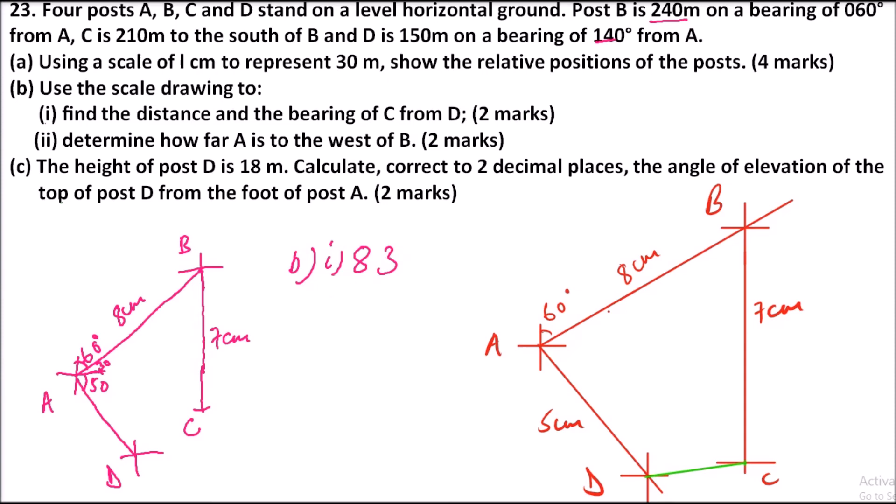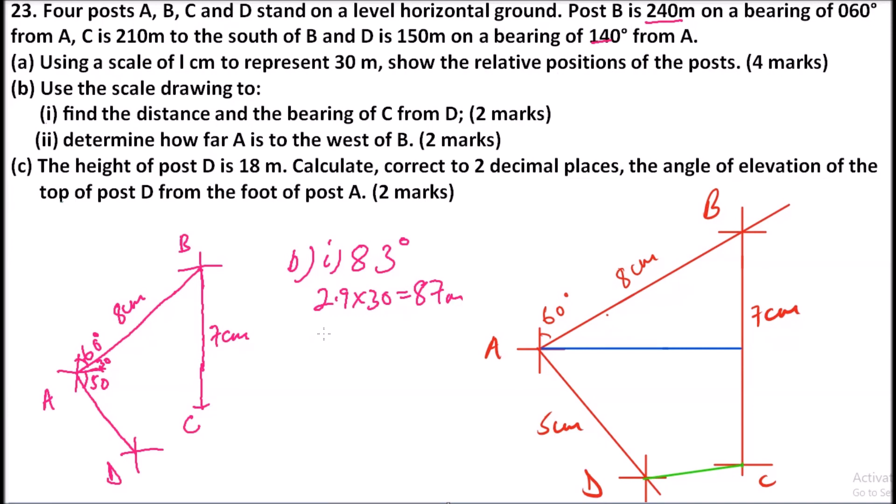And the distance I'm getting is 2.9, so it means 2.9 you multiply by 30 and you get that equals 87 meters. So that is part B of the question. Before we go to C, we look at roman number 2 of B. Determine how far A is to the west. I have drawn a line here which I found is 6 centimeters, so it means 6 multiplied by 30, and that is giving me 180 meters. So A is 180 meters to the west of B.